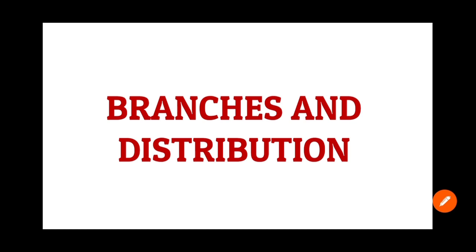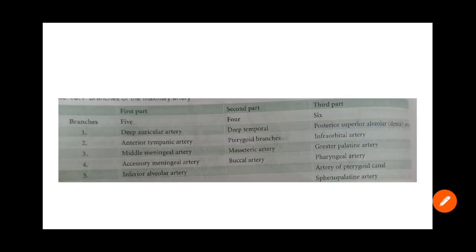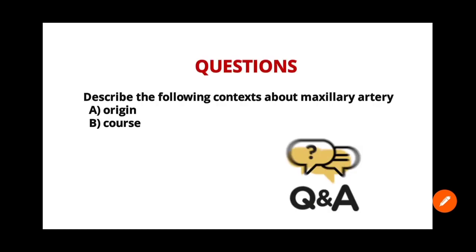We have already discussed the origin and course. Now regarding the branches: from the first part of the maxillary artery there are five branches, from the second part there are four branches, and from the third part there are six branches. I will discuss all these branches in the next video using a mnemonic to make it simpler.